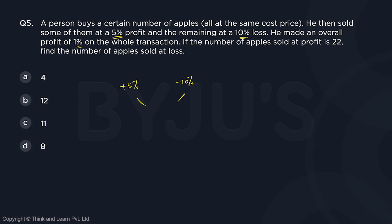I am using the concept of allegation to solve this profit and loss problem. It's a very interesting approach — observe carefully. You can do this when you are mixing +5% and -10% and the net result is +1%, which is what allegation talks about. So in what ratio should they be mixed? This is 1 minus (-10) which is 11, and 5 minus 1 which is 4. They should be mixed in an 11:4 ratio.